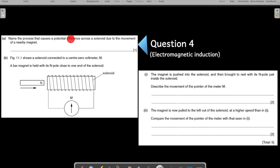Name the process that causes a potential difference across a solenoid due to the movement of a nearby magnet. Simple. We have a chapter dedicated to it as well. This is because of electromagnetic induction. The answer should be electromagnetic induction.